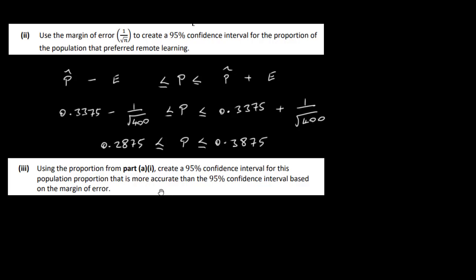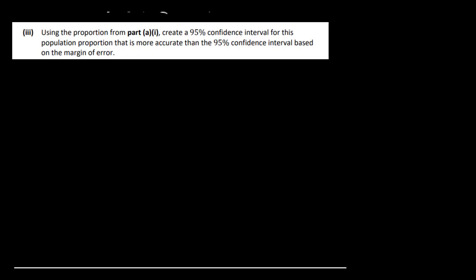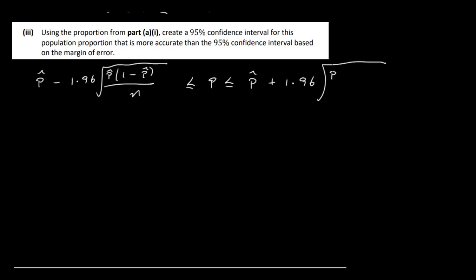There is a more accurate way of doing it, and I think this is what we're going to do in part 3: using the proportion from part A1, create a 95% confidence interval that is more accurate than the one based on the margin of error. So we use the more accurate formula: p-hat minus 1.96 times the square root of p-hat times (1 minus p-hat) over n, and on the other side p-hat plus 1.96 times the square root of p-hat times (1 minus p-hat) divided by n.